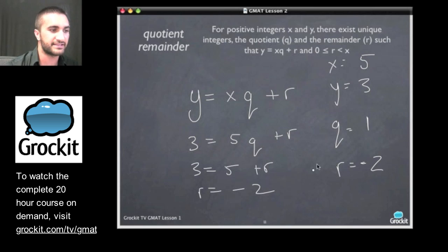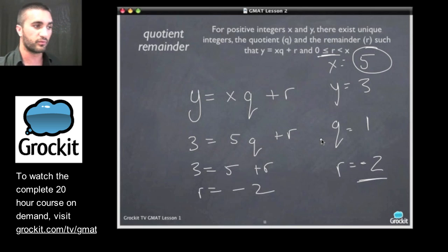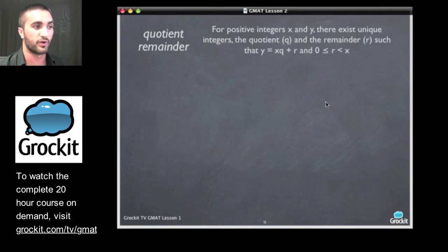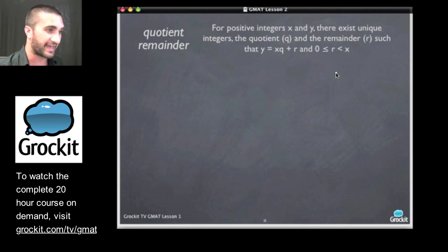So does this make sense? It's said that the remainder has to be greater than or equal to zero but less than x. Well, x is five, and negative two is less than five. But we didn't pick numbers that actually fit the definition of what a quotient and remainder are. When we plug in numbers on the GMAT, you're going to see that we have to pick numbers that work with the definitions provided to us. So let's try that again and use numbers that can work.